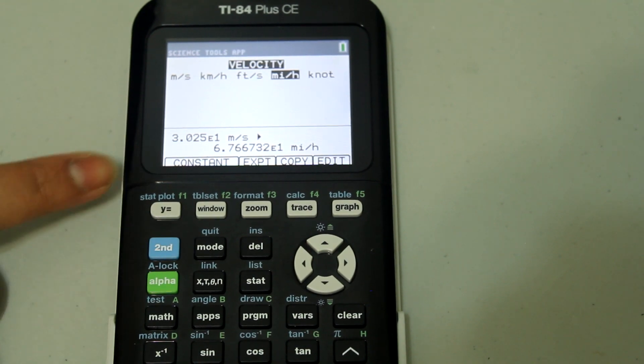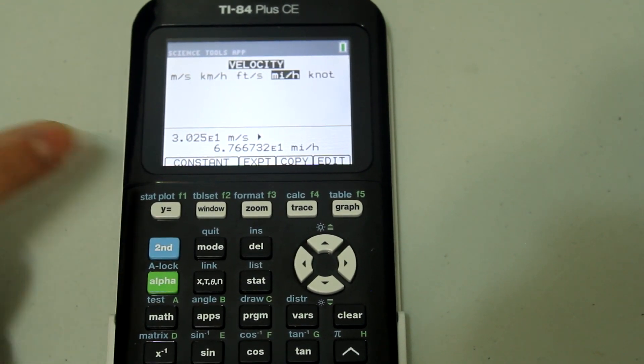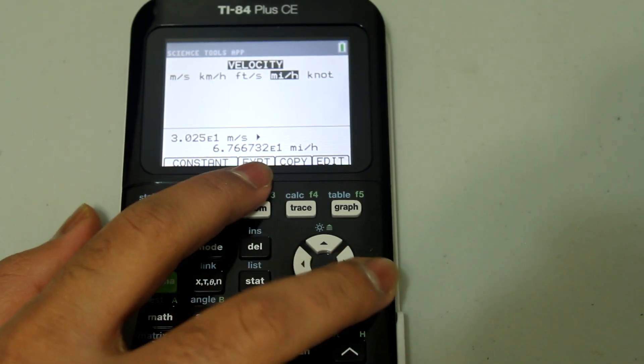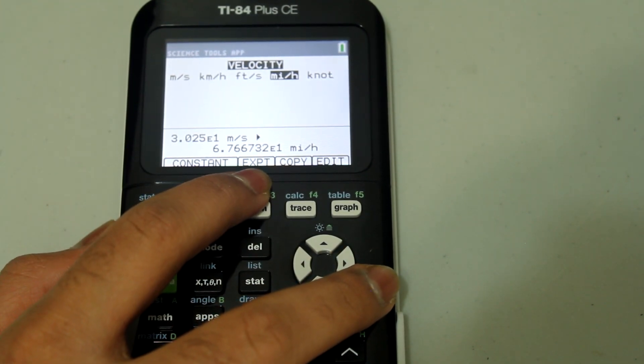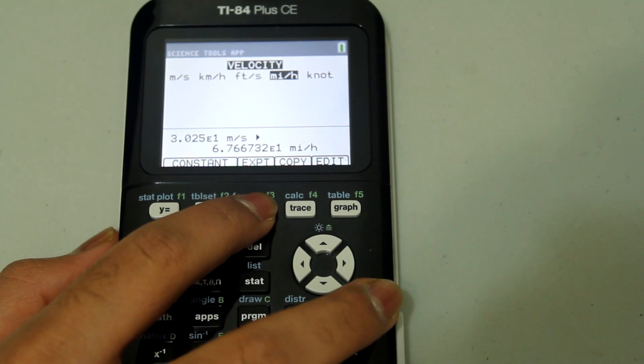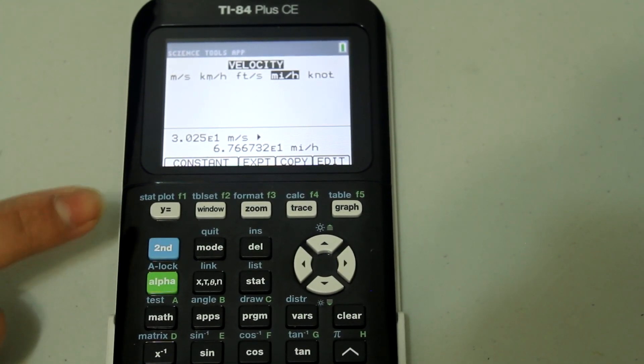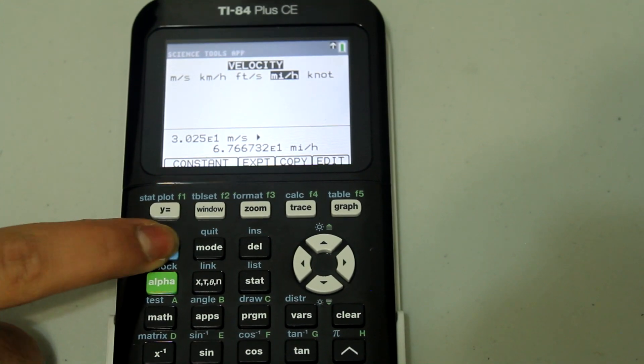If you wanted to use this in a further calculation and you wanted to export this to the home screen, what you would do is hit the button under EXPT, which is the zoom button, and once you press it, you see that nothing happens. What you have to do is hit second, quit.